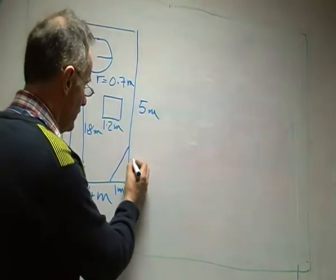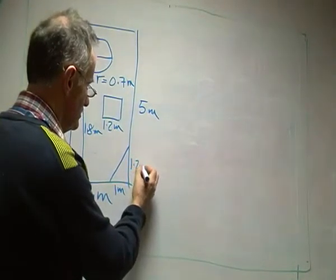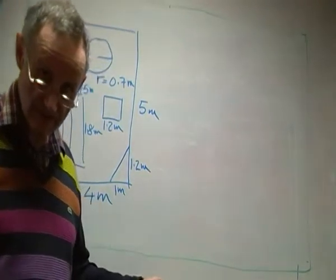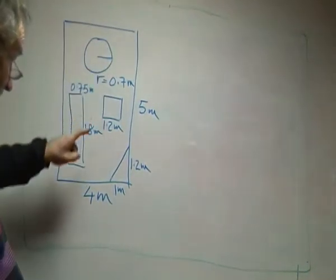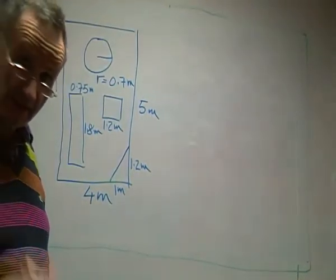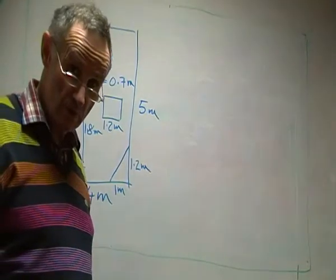I'm also going to have a barbecue pit. This is going to be triangular, and I'm going to put it down in the corner here. I'm going to have it 1 metre by 1.2 metres.